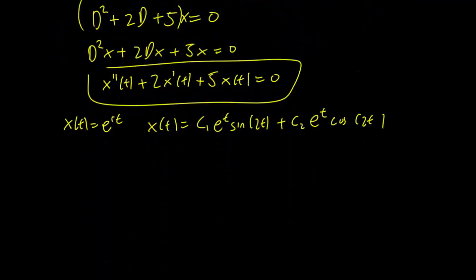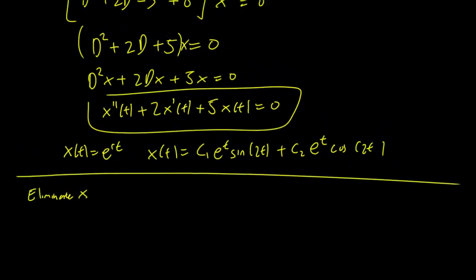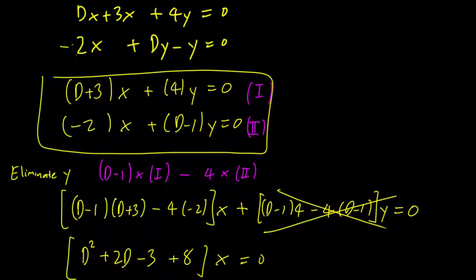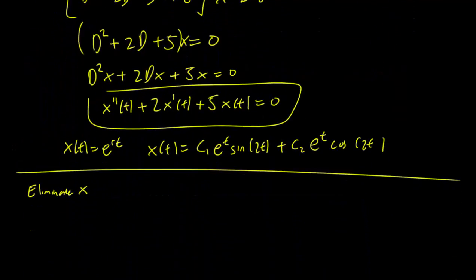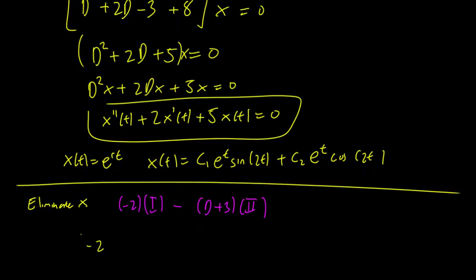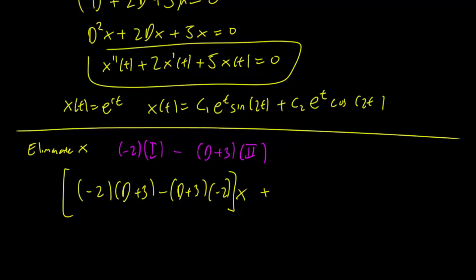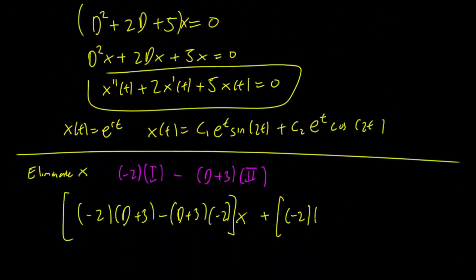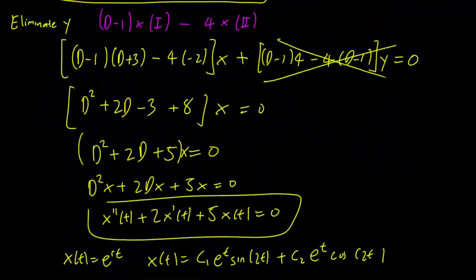So we can do the same thing to eliminate x to get a second equation. This time, we have to multiply the first equation by -2 and the second equation by (D+3). So we have -2 times the first equation minus (D+3) times the second equation. And that should eliminate x. And we end up with -2(D+3) - (D+3)(-2) applied to x plus -2 times 4 minus (D+3) times (D-1)...